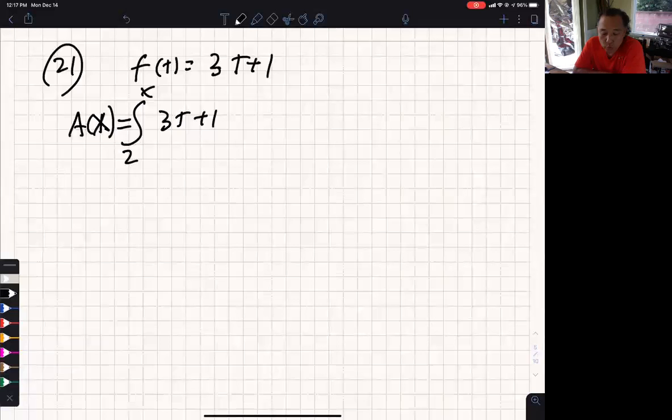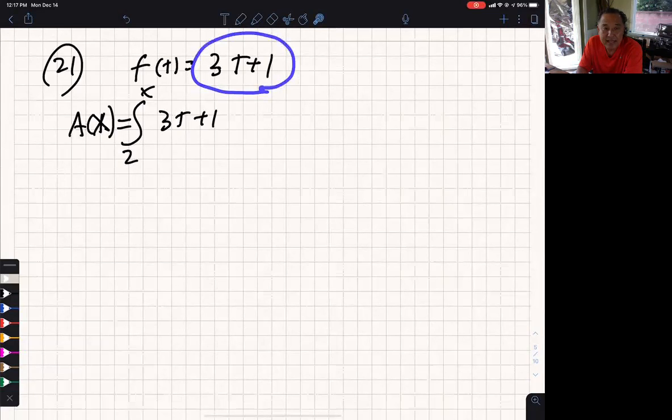This is 5.4 number 21. They give us a function and ask us to find the area function from 2 to x for this function.